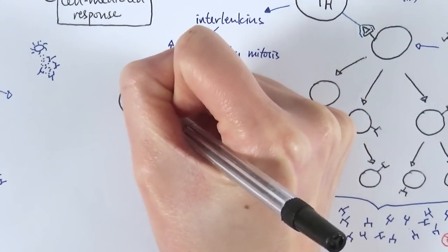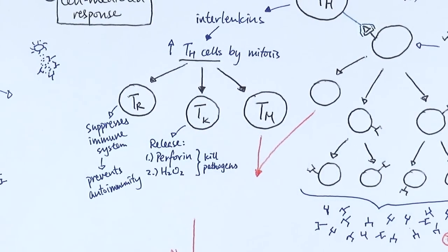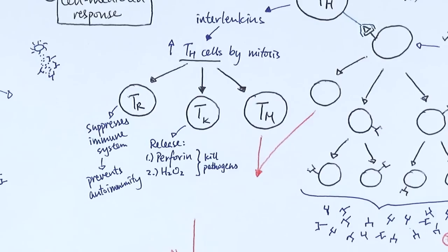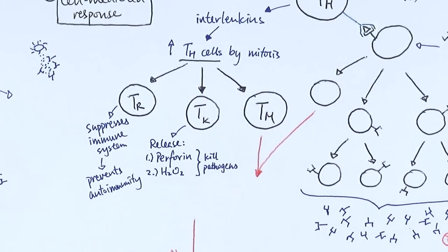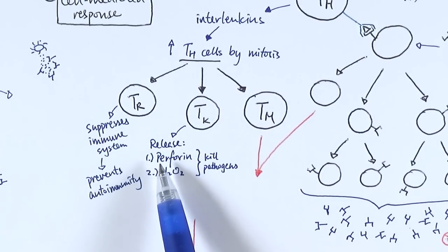Another T cell type is the T regulatory cell, which has a very specific function: it suppresses the immune system. The idea is that it kills all of the other active white blood cells that were previously used to control the infection. If T cells or B cells continue after the infection is finished, they go into overdrive and start attacking our own body cells — what we call autoimmunity. T regulatory cells prevent that from happening.